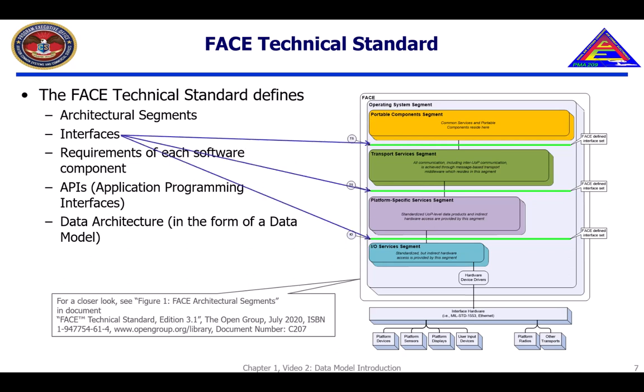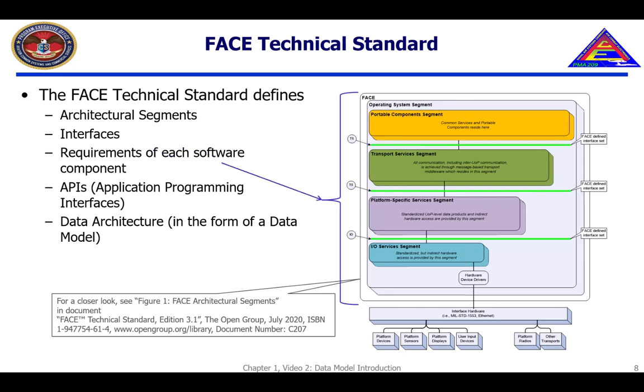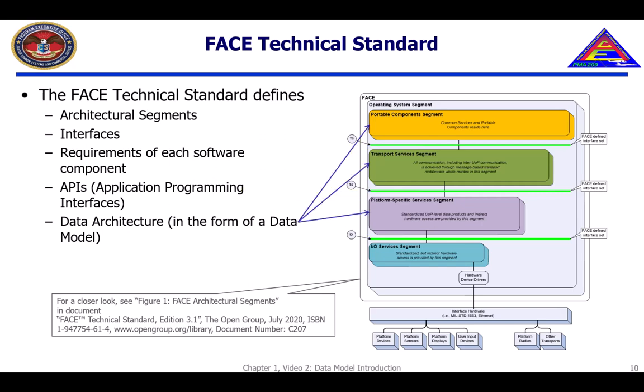The FACE standard defines architectural segments similar to the OSI stack categories for enhanced separability and portability of individual software components; interfaces that govern the way software components communicate across segments; requirements of each software component based on the segment into which it falls, and factors such as safety and security constraints; and application programming interfaces, or APIs, for connecting software components.